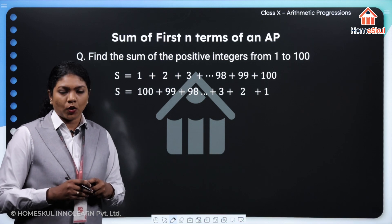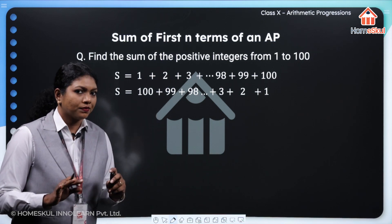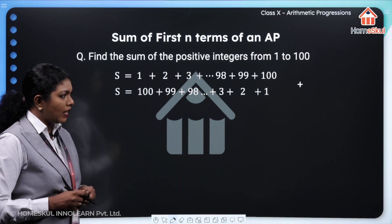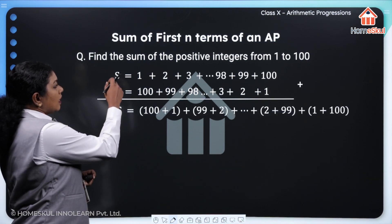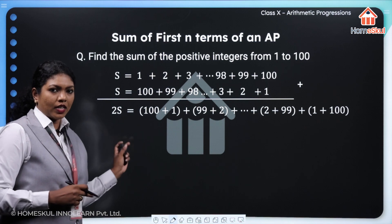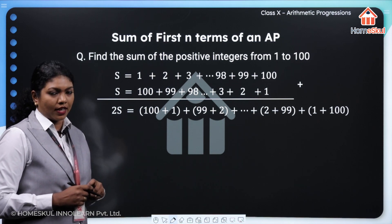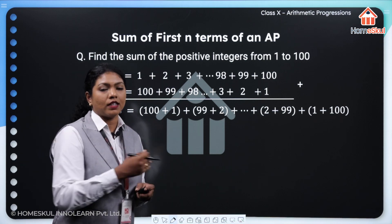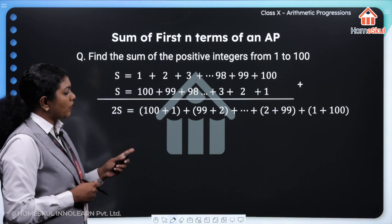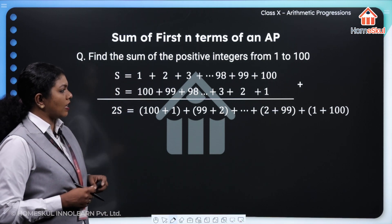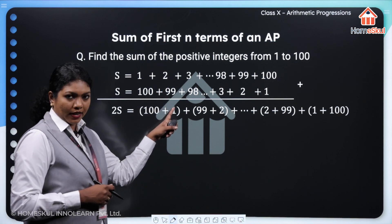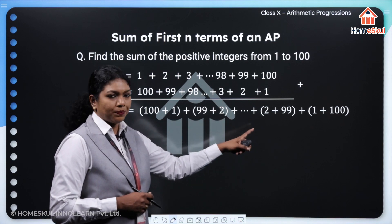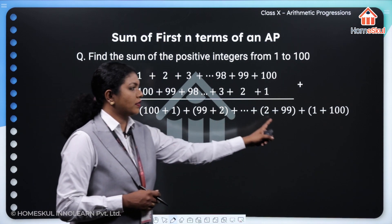We are writing it in reverse order — once 1 to 100 and once 100 to 1. Now we have two equations, but both are the same. Now I will add these two equations. On the left-hand side, S plus S gives 2 times S. On the right-hand side, we add term by term: 1 plus 100, 2 plus 99, 3 plus 98, and so on, giving us pairs.